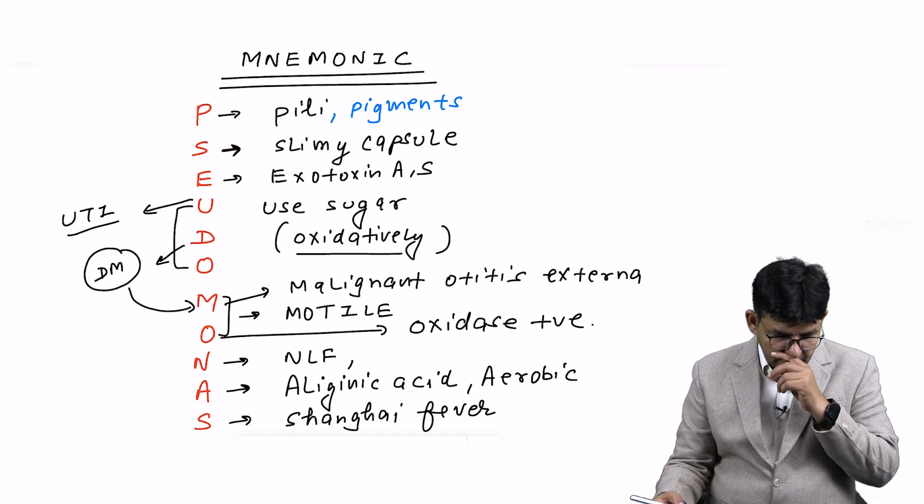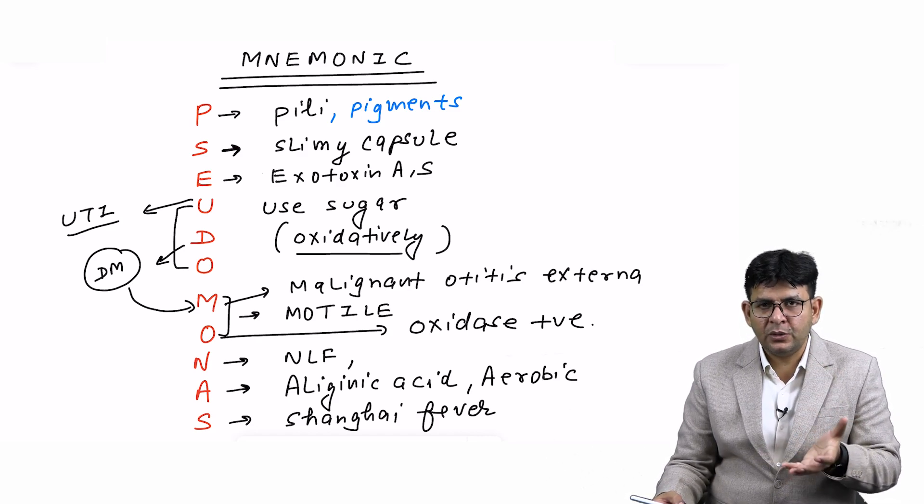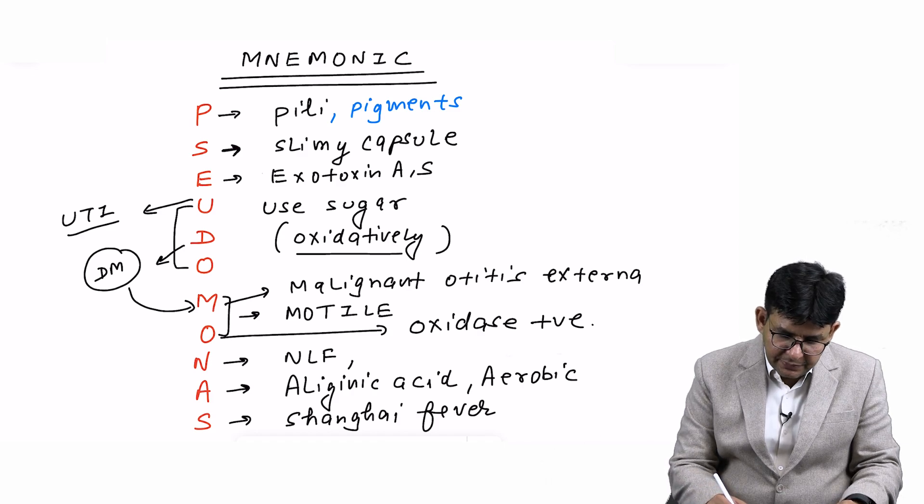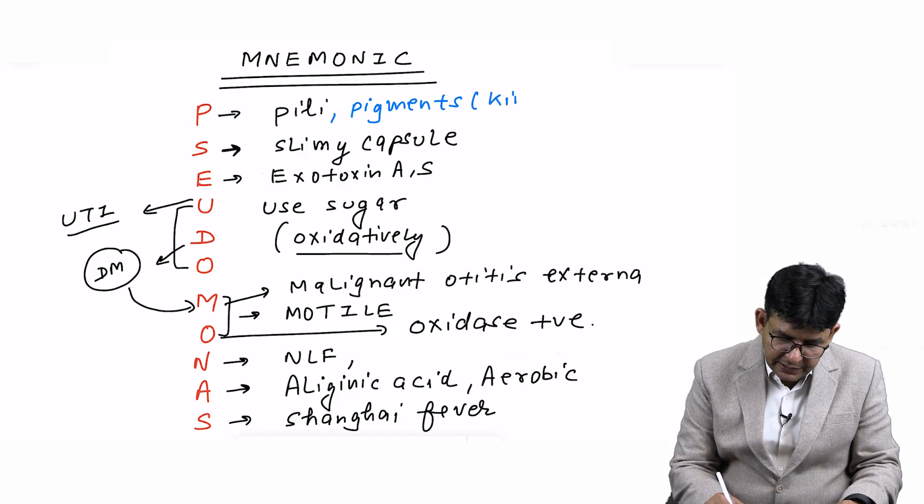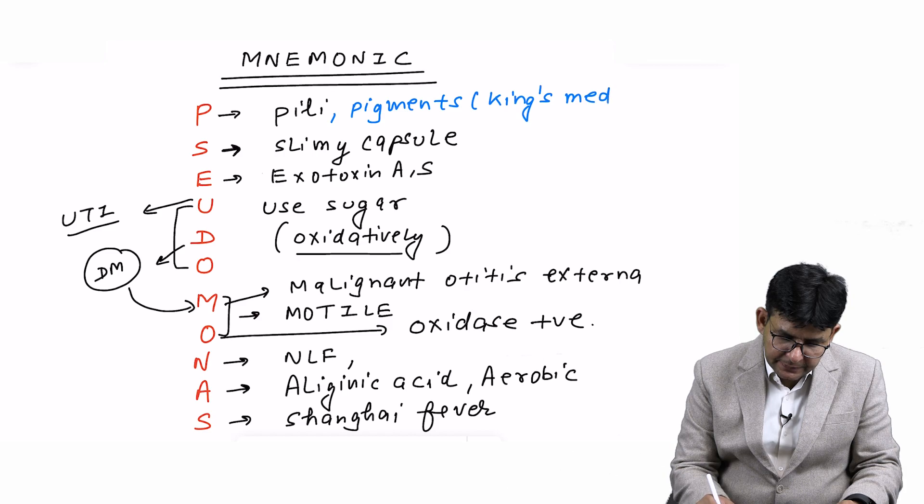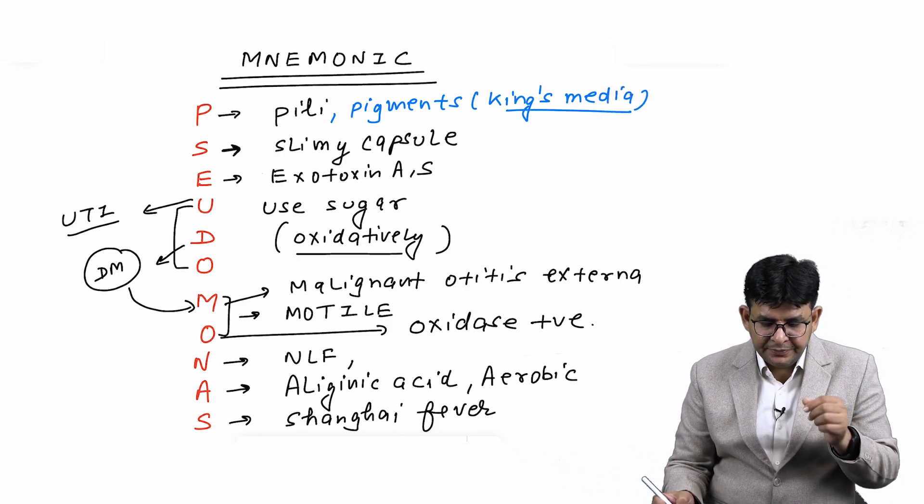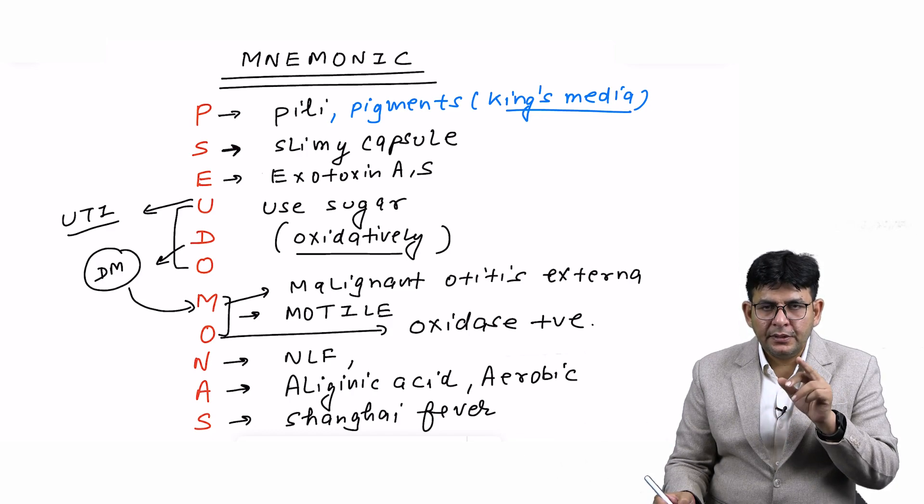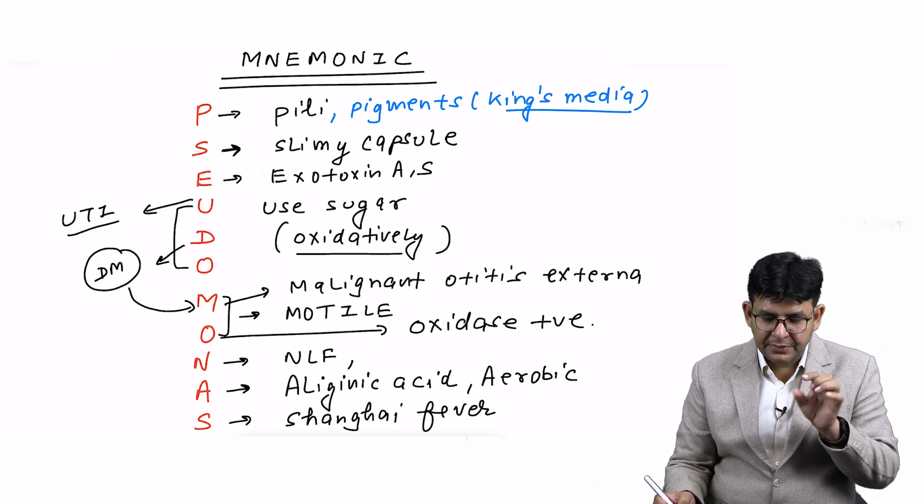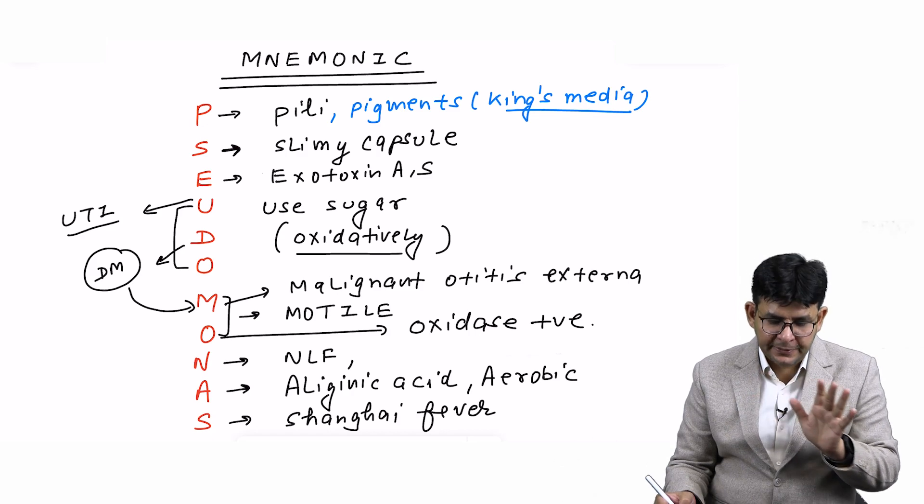These particular pigments enhance on a media termed as King's media. The best selective media is cetrimide agar, but the pigments enhance on King's media.